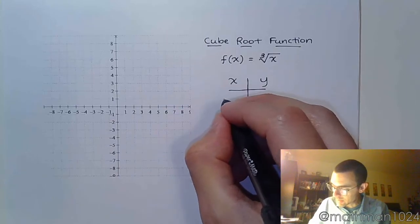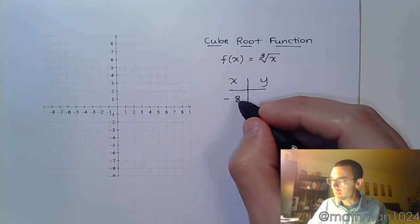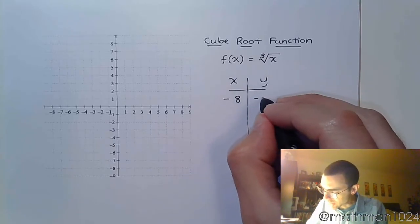But what I will plug in will be negative 8. See, if I plug in negative 8, 8 is a perfect cube, and I can do negatives inside the cube root, so I end up with negative 2.